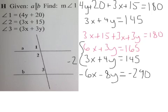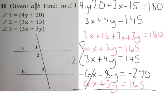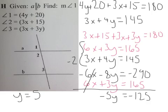And then, of course, I still have my red equation, which is the 6x plus 3y equals 165. So I'm going to add these together. These guys cancel out. I'm going to move with negative 5y equals negative 125, which means that we're going to get y equals, I'm running out of room here, 25.